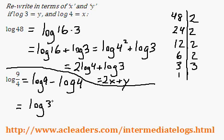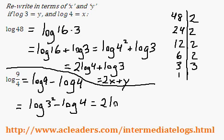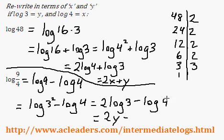9 is 3 squared, so log 3 squared is just 2 log 3 minus log 4. Log 3 is equivalent to y, so we have 2y. And log 4 is x. So the answer is 2y minus x.